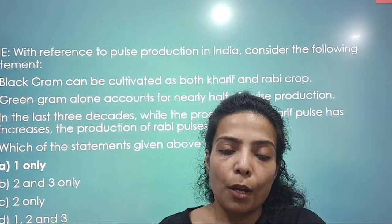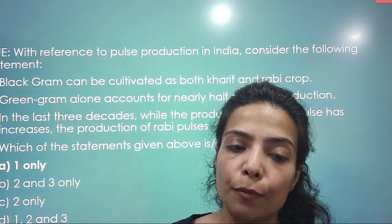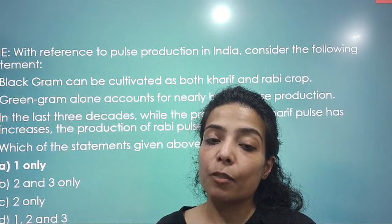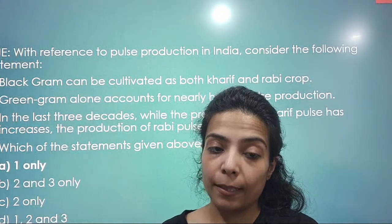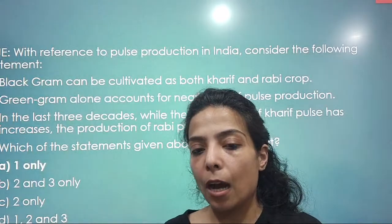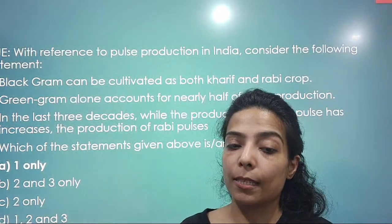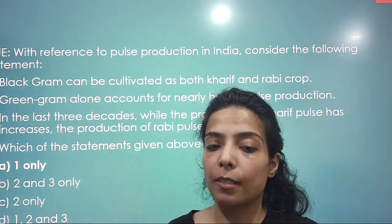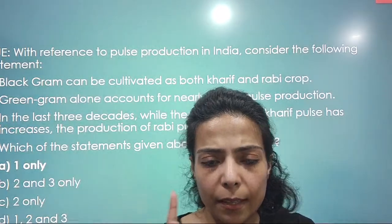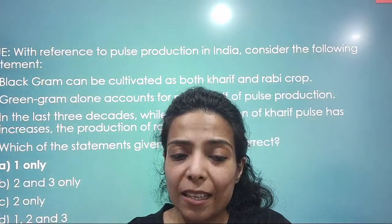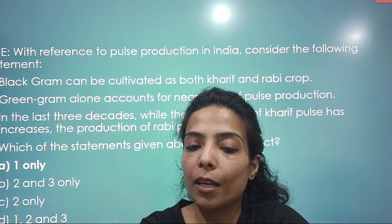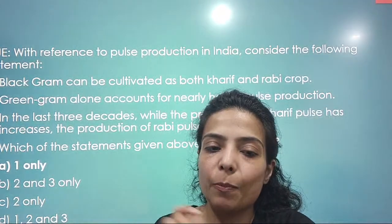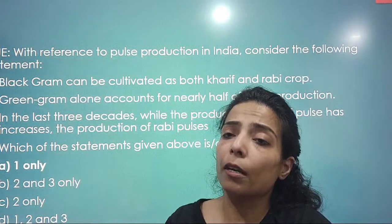With reference to pulse production in India: Black gram can be cultivated as both kharif and rabi crop — that is a true statement. Green gram alone accounts for nearly half of pulse production — that was not right. In the last three decades, the production of kharif pulses increased and rabi pulses also increased — both actually increased. The only correct statement was the first one: black gram can be cultivated as both kharif and rabi crop.